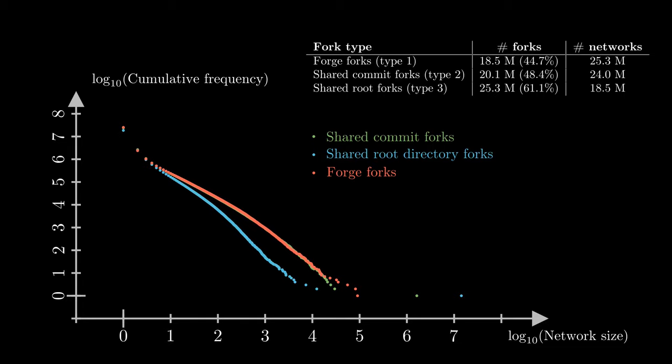And keep in mind that we aren't even counting forks from other hosts here, so that is pretty significant. However, there is a very large discrepancy at the level of the largest giant networks. It appears that the intrinsic definitions merge together a huge proportion of repositories — the largest components are 15 to 150 times larger than for the forge forks, which is a very big difference.